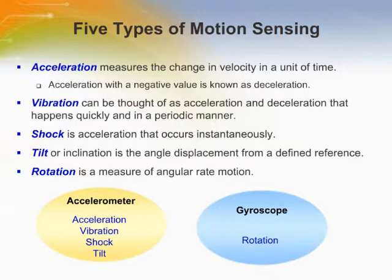Acceleration includes translational movement and measures the change in velocity in a unit of time. Acceleration with a negative value is called deacceleration. Vibration can be thought of as acceleration and deacceleration that happens quickly in a periodic manner. Shock is acceleration that occurs instantaneously, and unlike vibration, it is a non-periodic function that typically happens once. Tilt is the change in position with respect to a defined reference. Rotation is a measure of angular rate motion.